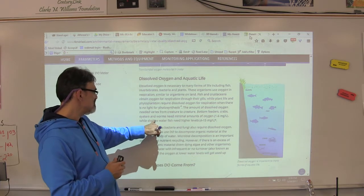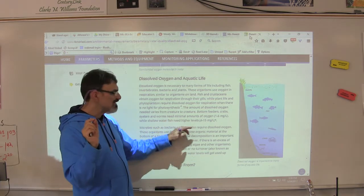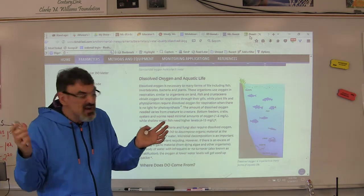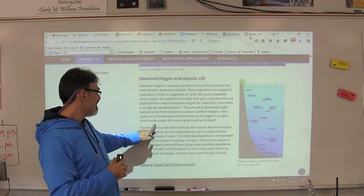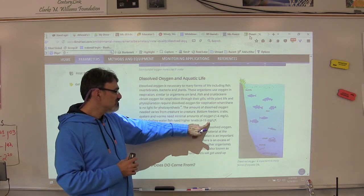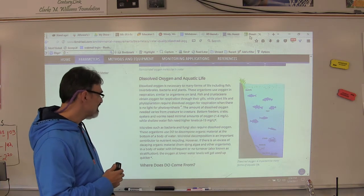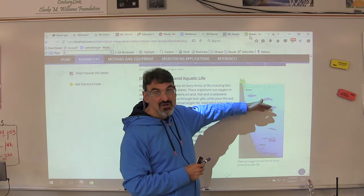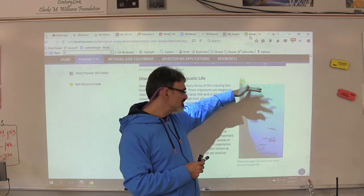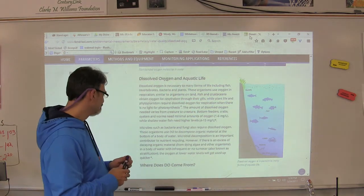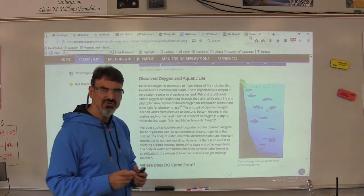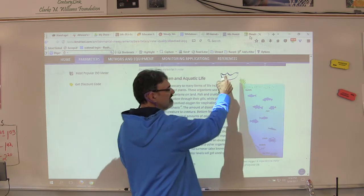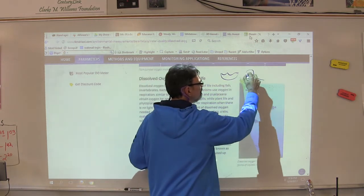Bottom feeders, crabs, oysters, and worms need minimal amounts, one to six milligrams per liter. Some of them can survive on that, that's not much. Shallow water fish though, they need more, they need four to fifteen milligrams per liter. But think about it, the shallow water is making more contact with the air so it's gonna have more dissolved oxygen.